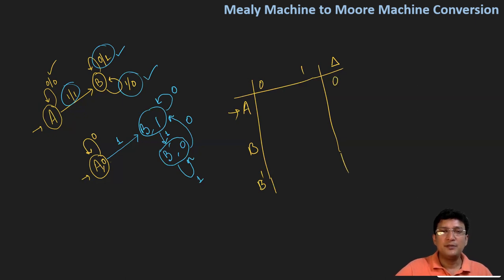The output associated with A is 0, with B it is 1, and with B dash it is 0. Now let's mark the transitions: A on 0 remains at A, A on 1 goes to B. B on 0 remains at itself, B on 1 goes to B dash. B dash on 0 goes to B, and B dash on 1 remains at itself.